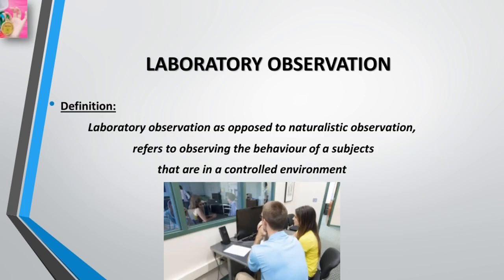Laboratory observation refers to observing the behavior of subjects in a controlled environment, as opposed to a natural setting. Sometimes observing behavior in a natural setting is simply not practical. For example, a researcher might want to observe animals' reactions to a mirror image of themselves using a camera mounted behind a one-way mirror — equipment that would be difficult to set up naturally. In laboratory observation, researchers bring the animals to the equipment, controlling the type and number of animals and all other conditions.